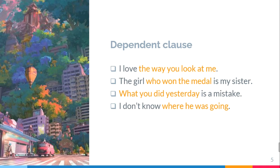The last example: 'I don't know where he was going.' This is from the sentence 'I don't know the place,' where 'the place' is explained further as 'where he was going.' 'Where he was going' is a dependent clause explaining 'the place.' So all sentences in this example consist of two clauses each — one independent clause and one dependent clause.